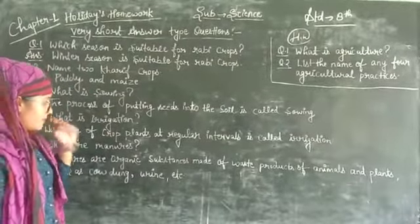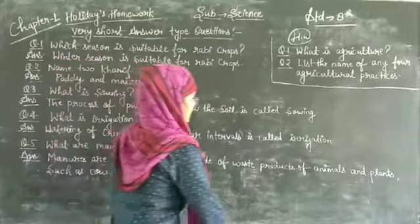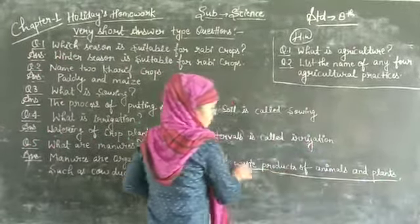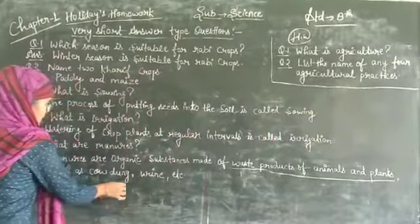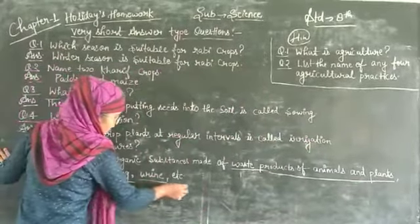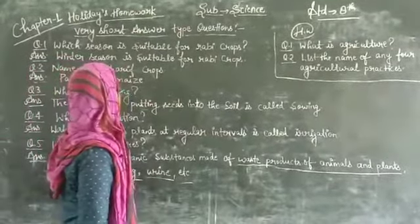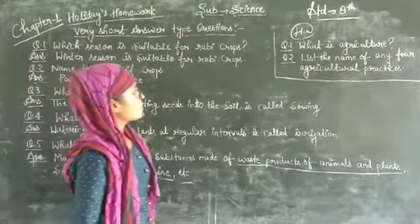Manures are organic substances, based products of animals and plants. Products of cow dung, urine, and some plant paste. These are organic materials.